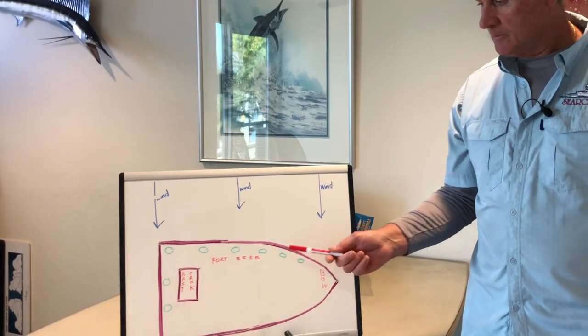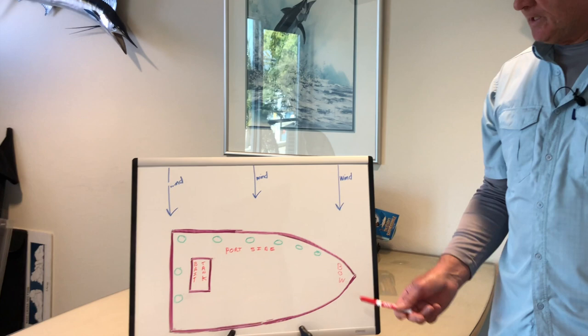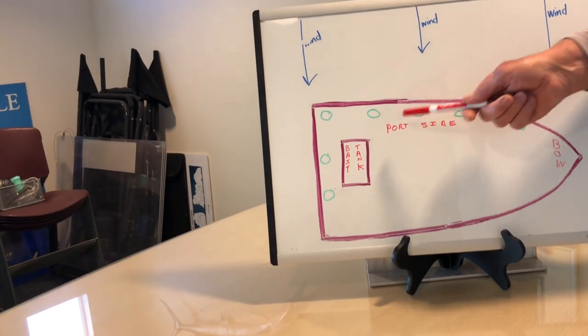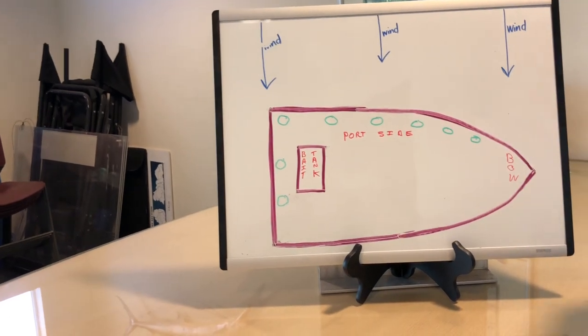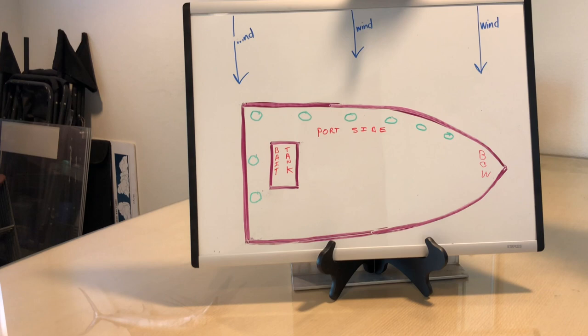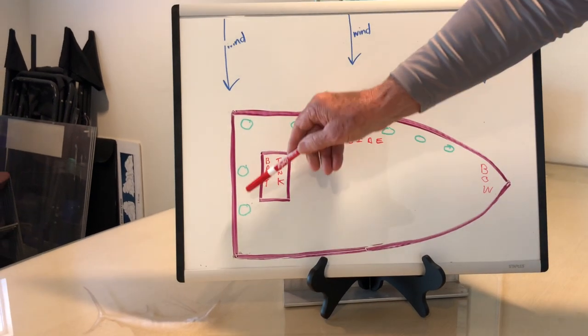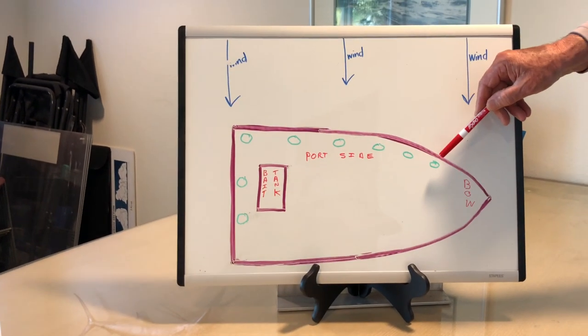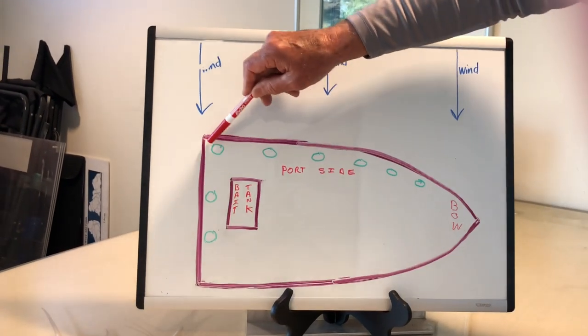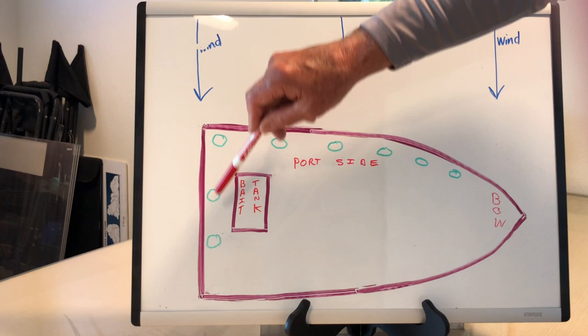So this is just a poor replica of a boat, but here's the bow, here's the bait tank, and this is the port side. You'll see that in blue here we have wind coming from this direction, and the green circles are anglers. So these anglers are on the correct side of the boat in the stern and on the port side with the wind in your face.